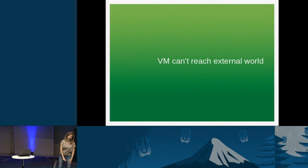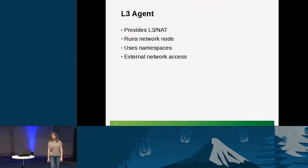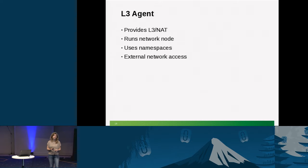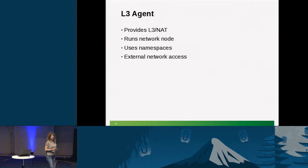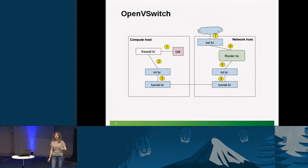The next issue: the VM can't reach the external world — for example, you're trying to reach openstack.org from the VM and nothing happens. To understand this problem, we need to introduce a new agent: the L3 agent. This is the agent in charge of providing L3 connectivity. It runs on the network node, same as the DHCP agent, and uses namespaces for network isolation. The router in Neutron is implemented using namespaces, and the L3 agent provides access to the external network.